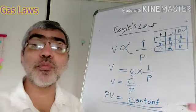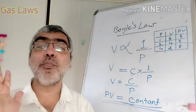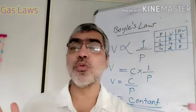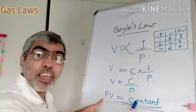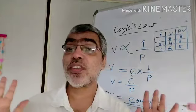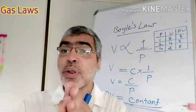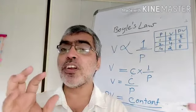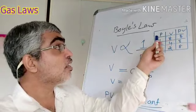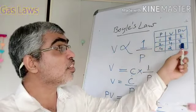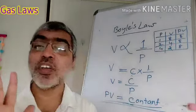There is a British scientist — Robert Boyle — who established this relationship. PV is a constant when temperature is constant. That is the condition: when the temperature is constant, PV is a constant. This is Boyle's Law.